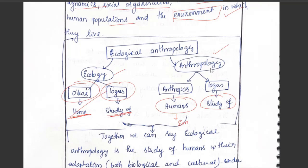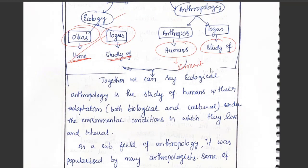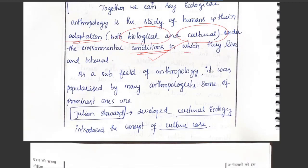Together, we can say ecological anthropology is the study of humans and their adaptations — both biological and cultural — under the environmental conditions in which they are living. As a subfield of anthropology, it was popularized by several prominent anthropologists.